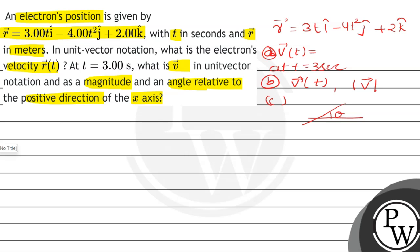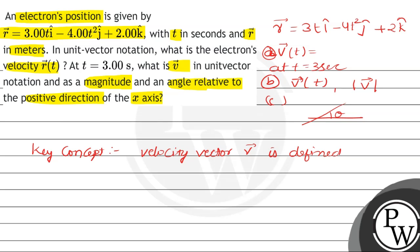So students, please note the key concept of this question. That is, the velocity vector v is defined as the differentiation of the position vector with respect to time.